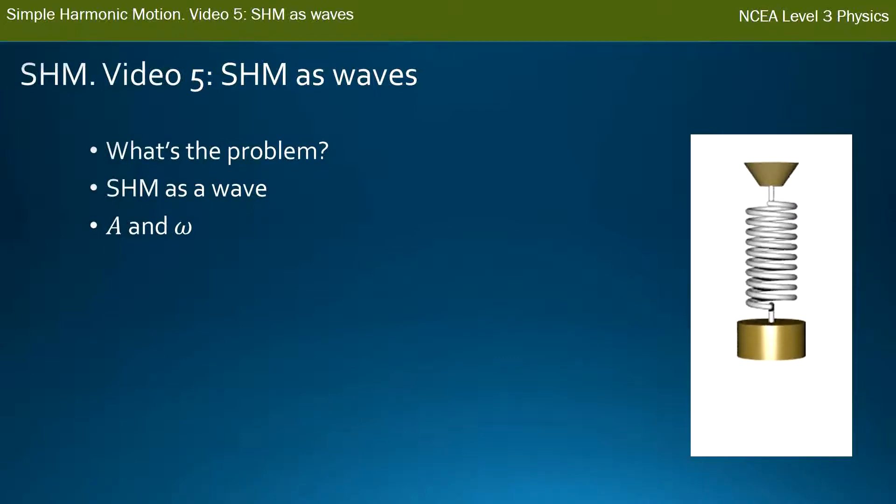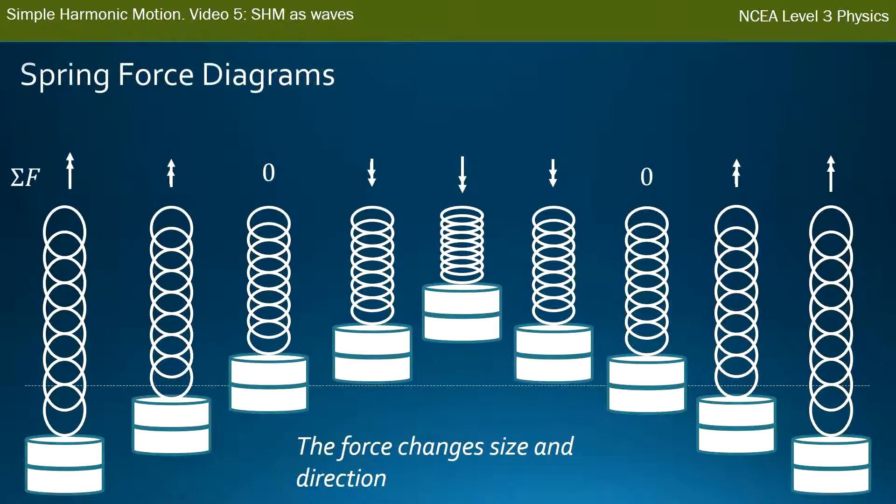You'll recall from two videos ago when I drew the forces on a spring as it's going through its bounce. These are the different points of its bounciness. The total forces always point towards the middle and they get bigger the further away the mass is from the equilibrium point. So you can sum that up as: the force, or the total force, changes size and it changes direction.